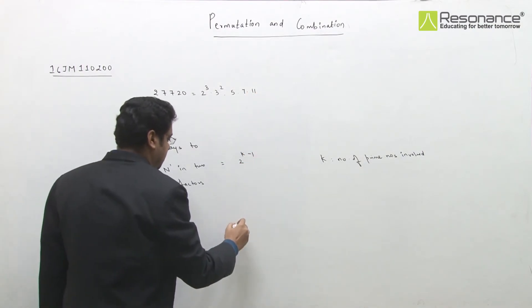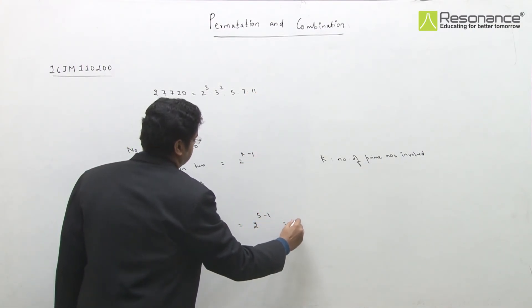1, 2, 3, 4, 5. So 5 prime numbers are involved. So the answer will be 16.